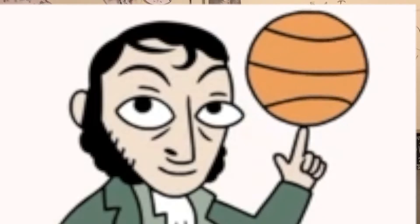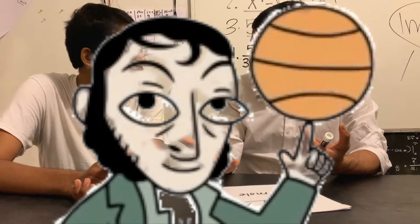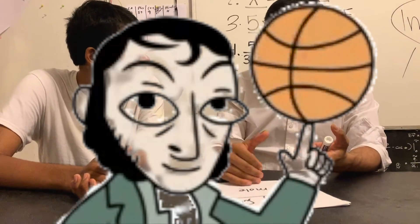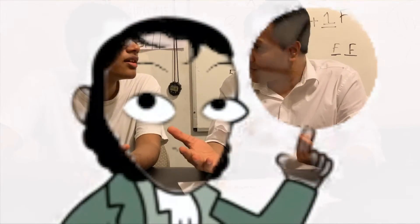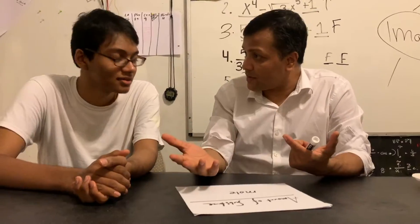What is the name of that number? Avogadro's number. 6 times 10 to the 23 is called Avogadro's number.